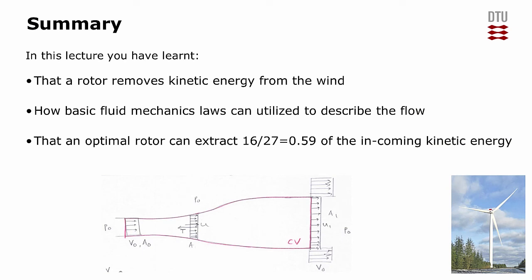So, in summary, in this session, we have learned that a rotor is a device that breaks the wind, and thereby extracts kinetic energy. We have seen how basic fluid mechanics laws can be used to describe the flow, Bernoulli's equation, mass conservation, momentum conservation, and we have found that an optimal rotor can extract 59% of the incoming kinetic energy.